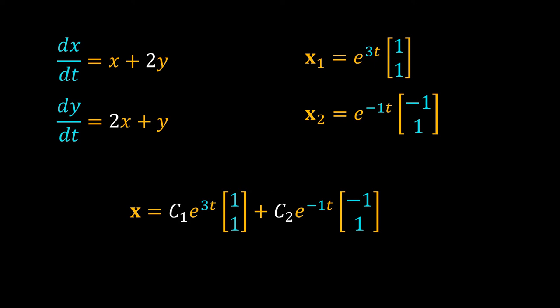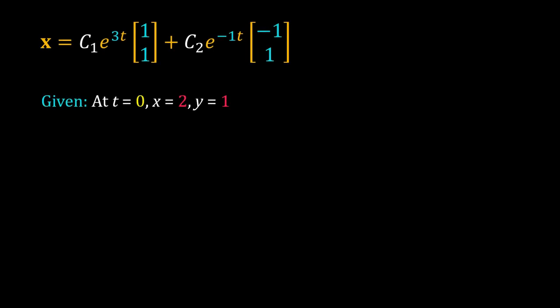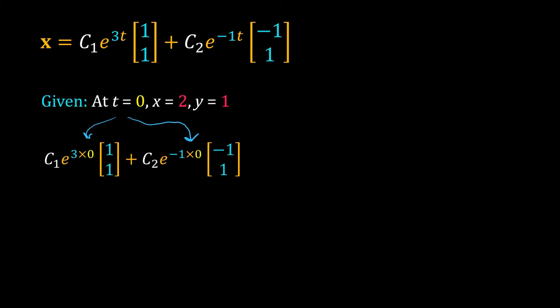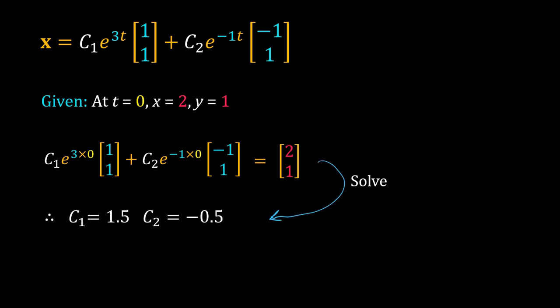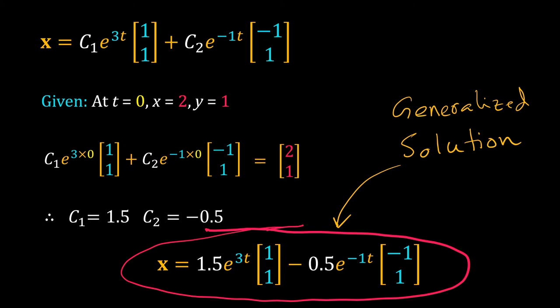We calculate the constants c1 and c2 from given information — usually the initial condition. Suppose at t = 0, x = 2 and y = 1. In the generalized solution, replace t with 0 and set it equal to the vector [2, 1], the initial position of the system. Though written using vectors, this equation is actually a set of two simultaneous equations with two unknowns, c1 and c2. Solving gives us the values of c1 and c2, and we can write the generalized solution for this initial condition. This solution represents the time evolution of the system.